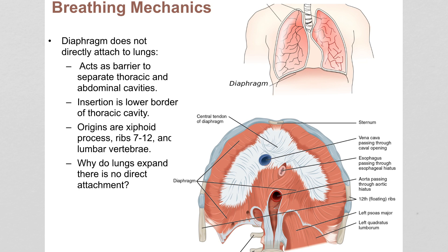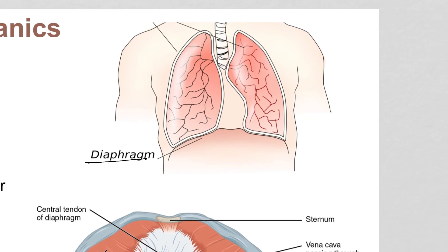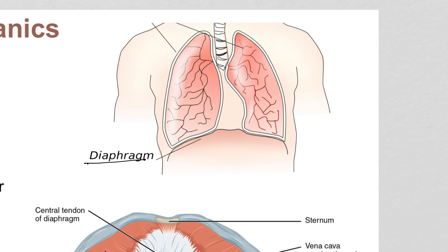The first concept is that there are a handful of muscles involved in breathing. By far the most important is the diaphragm — a muscle that essentially traces the border between the thoracic and the abdominal cavity.